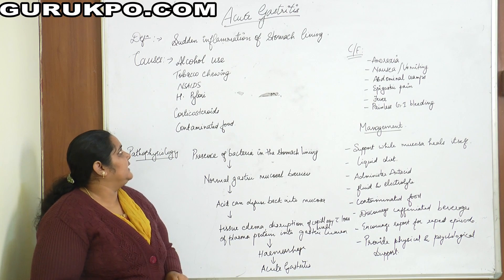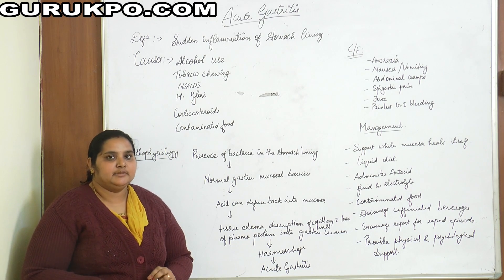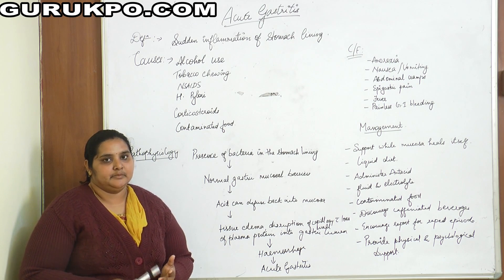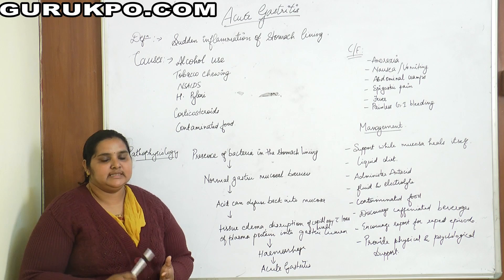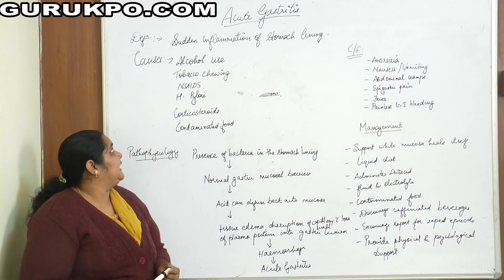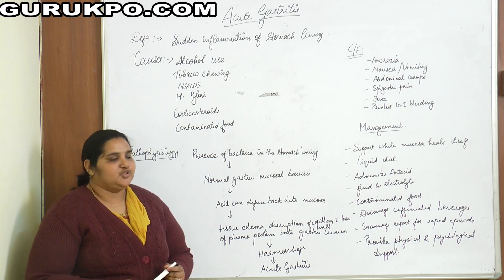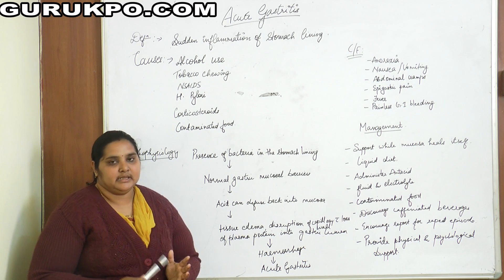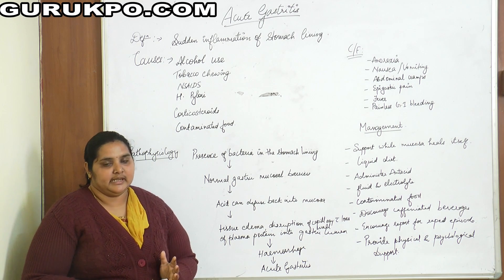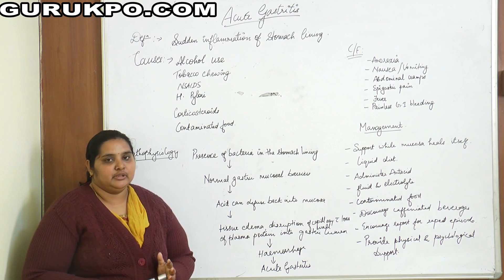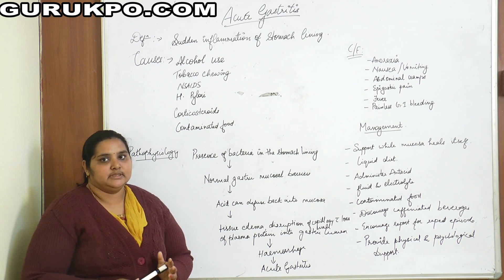Acute gastritis is defined as a sudden inflammation of the stomach lining due to consumption of contaminated food, bacterial growth, alcohol consumption, or cigarette smoking. The causes of acute gastritis include alcohol use, which causes irritation or damage to the stomach lining, and tobacco chewing, which irritates the mucosal lining.